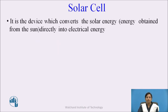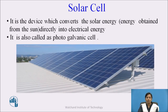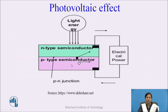A solar cell is the device which converts solar energy, i.e. energy obtained from the sun, directly into electrical energy. It is also called a photogalvanic cell. The basic principle behind the working of a solar cell is dependent upon the photovoltaic effect. Whenever light energy is allowed to fall on a solar cell, the solar cell generates voltage across its terminals. This is called the photovoltaic effect.